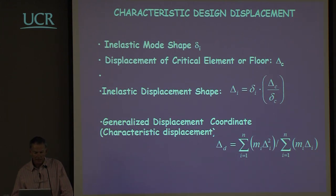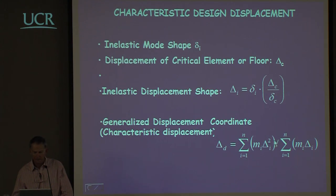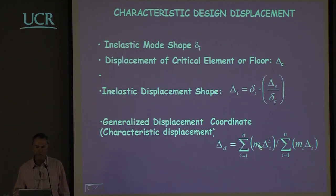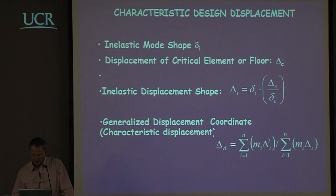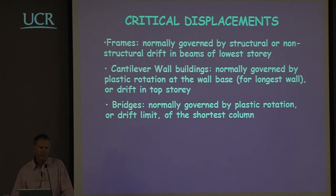Having done that, we can determine the generalised displacement coordinate, or characteristic displacement, of the first mode using this simple expression: the sum of the mass times the displacement squared divided by the sum of the mass times the displacements. This is a very simple expression common in any dynamic analysis textbook. The only difference is that this is an inelastic mode shape, not an elastic mode shape.